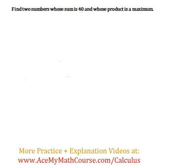Here we have an optimization problem. Find two numbers whose sum is 40 and whose product is a maximum.